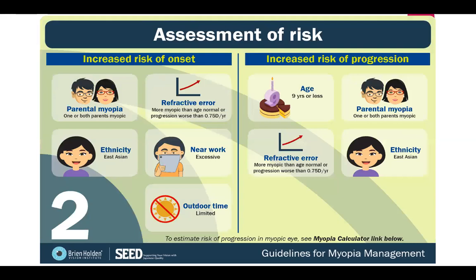You want to assess the risk. If the patient does not have myopia, look for increased risk of onset: are their parents myopic? Consider ethnicity — East Asian — near work, and limited time outdoors. But if they already have myopia, assess the risk that they're going to progress. Risk factors include being less than nine years old, parental myopia, refractive error, and ethnicity.